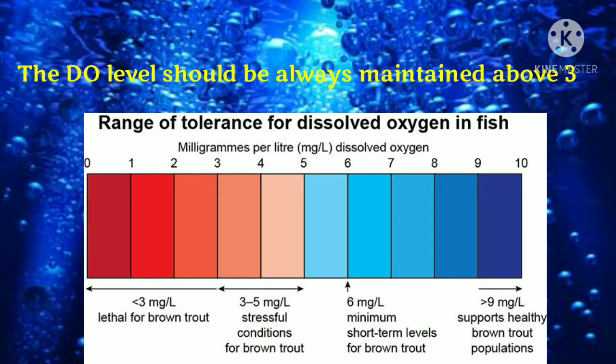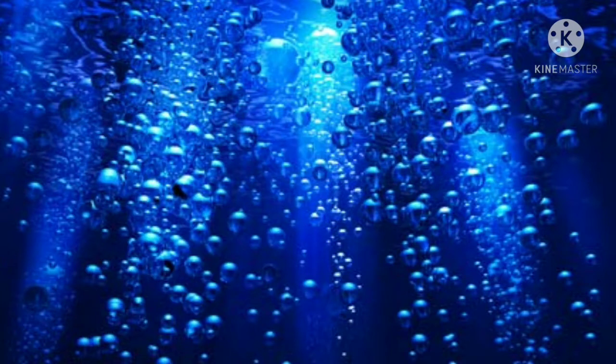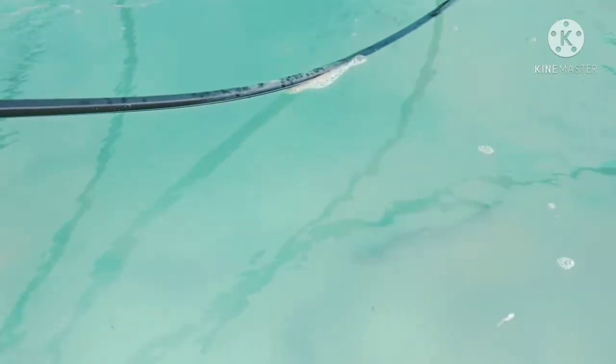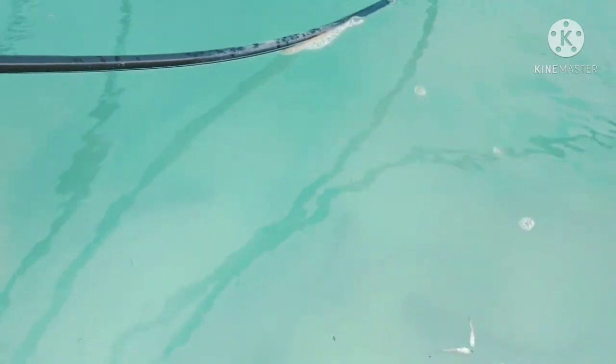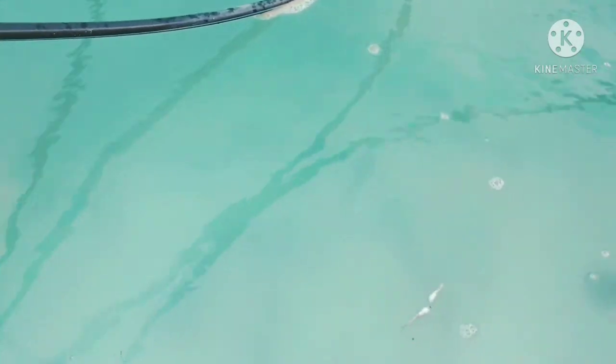It shouldn't be less than 3 — if it is less than 3, fish mortality might increase. For maintaining the DO level, you should have aerators. These four parameters are the main parameters to maintain in bio-floc.